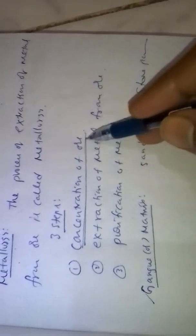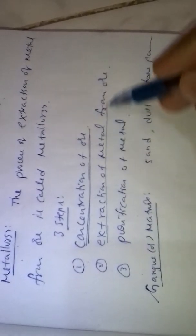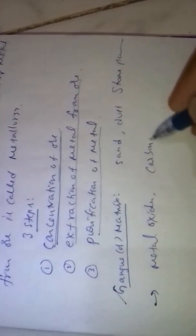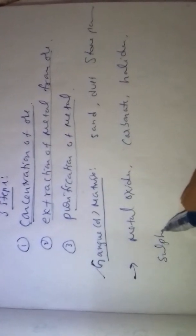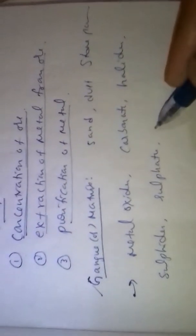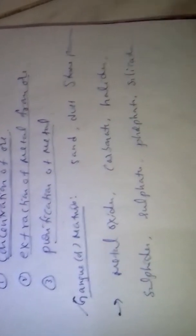Removal of gangue or matrix takes place in the first step, called concentration of ore. In the next step, we extract the metal from the ore, and in the third step, purification of metal is carried out. Generally, metals occur in different forms: as metal oxides, metal carbonates, metal sulfides, metal phosphates, and metal silicates.